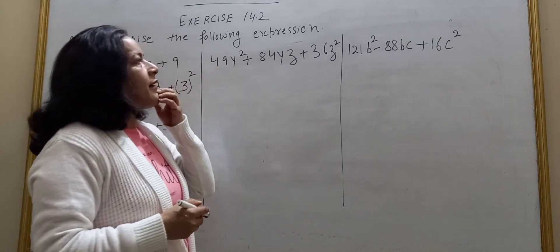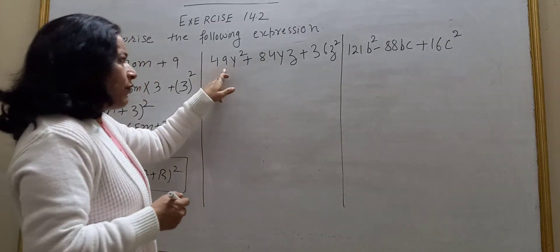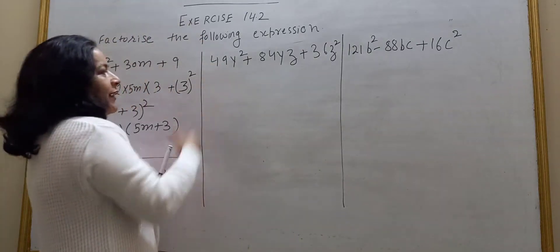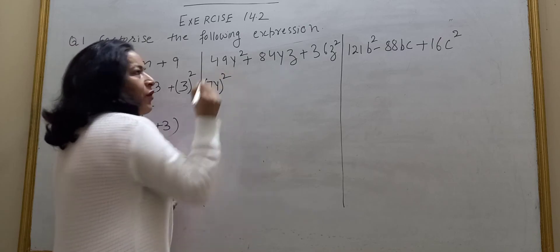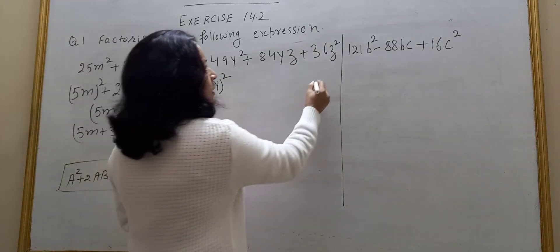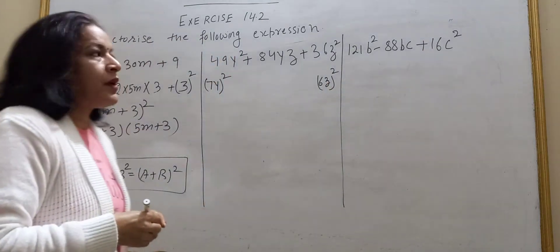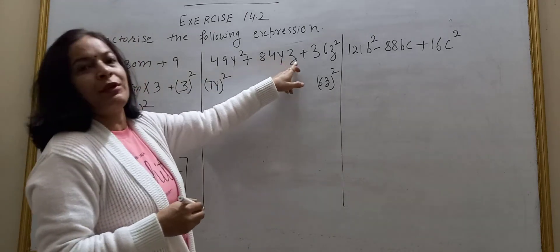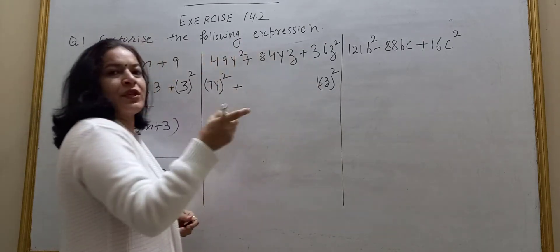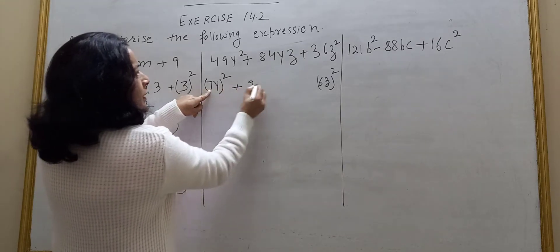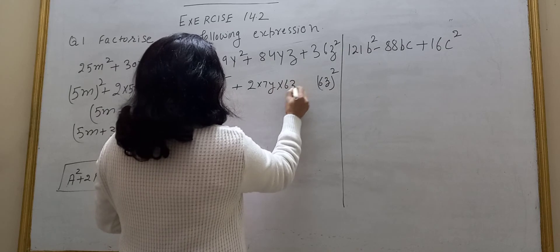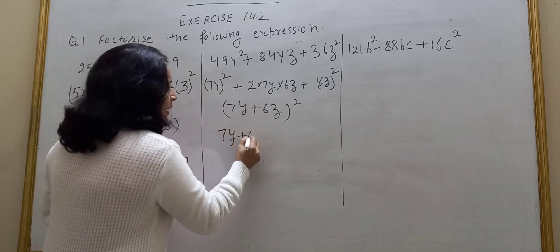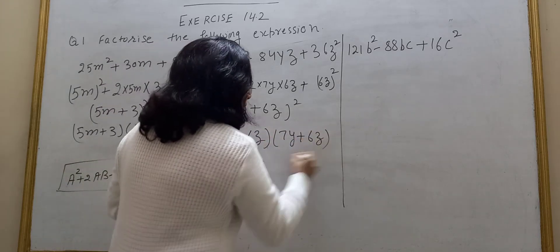One more example — again an algebraic expression with three terms. Are the first and last terms perfect squares? Yes. 49 is the square of 7, so it is 7Y whole squared. 36 is the square of 6, so it is 6Z whole squared. Middle term: 2 times 7Y times 6Z gives 84YZ. This becomes 7Y plus 6Z whole square. Factorized: 7Y plus 6Z into 7Y plus 6Z.